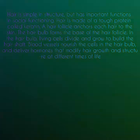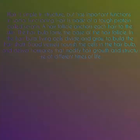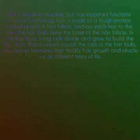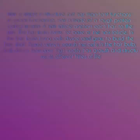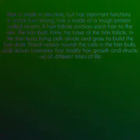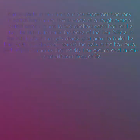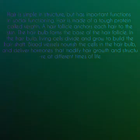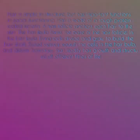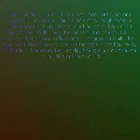Hair is simple in structure but has important functions in social functioning. Hair is made up of a tough protein called keratin. A hair follicle anchors each hair into the skin. The hair bulb forms the base of the hair follicle. In the hair bulb, living cells divide and grow to build the hair shaft. Blood vessels nourish the hair bulb and deliver hormones that modify hair growth and structure.